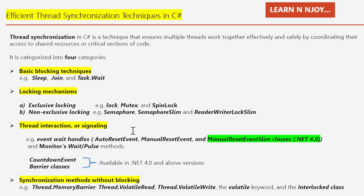Category 3 is thread interaction or signaling. This category focuses on communication between threads. Options include event wait handles like AutoResetEvent, ManualResetEvent, and ManualResetEventSlim, introduced in .NET 4.0. We also have Monitor's Wait and Pulse methods, CountdownEvent, and Barrier classes, both available in .NET 4.0. Finally, category 4 is synchronization methods without blocking. These ensure synchronization without blocking threads entirely, including Thread.MemoryBarrier, Thread.VolatileRead, Thread.VolatileWrite, the volatile keyword, and the Interlocked class.